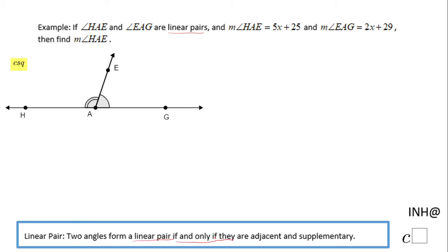if and only if they are adjacent, that means one next to the other, and they are supplementary. In fact, this is the property that I'm gonna use. However, you need to notice these two angles: ∠HAE and ∠EAG are adjacent.